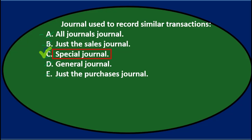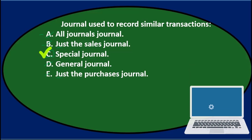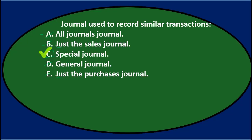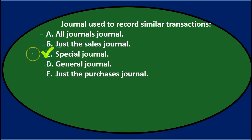Special journals are used in more of a manual system, as opposed to an automated system, to simplify the process by recording transactions of a similar nature into that journal, summing them up at the end of the period, and making one transaction in the general journal for that summary. The answer is C: special journal.